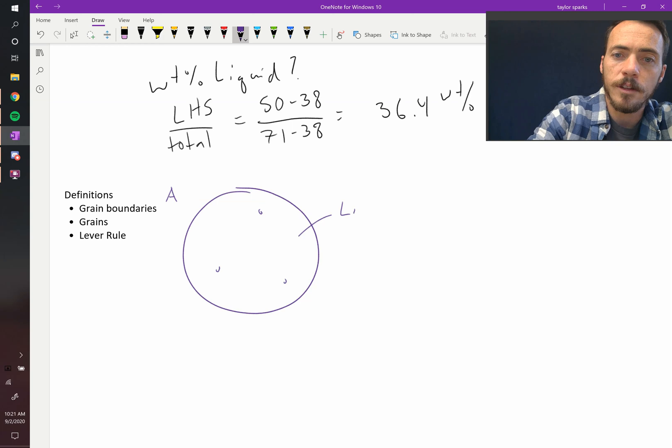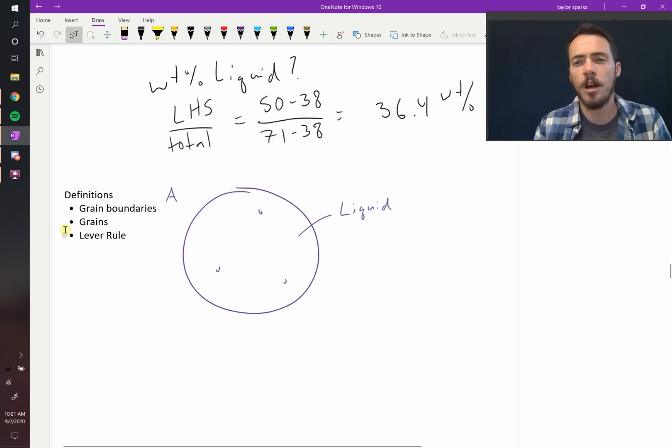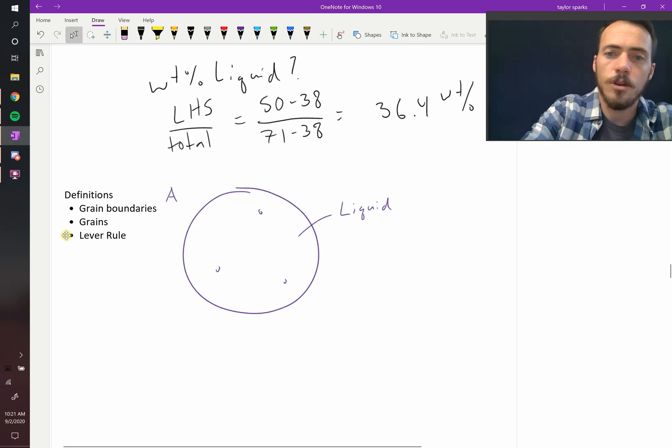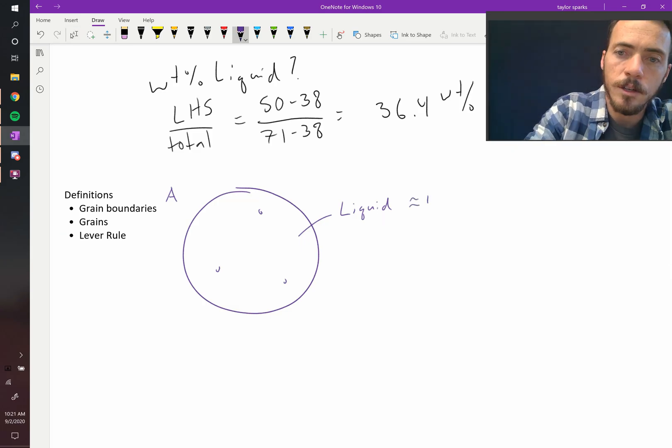So this we would label, we'd say that this is liquid. And it's common to show both the composition and the amount. So this would be essentially 100 weight percent liquid.